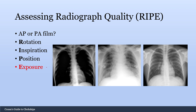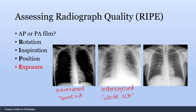E is for exposure. A well-exposed film allows you to see the vertebral column behind the heart. An underexposed film has a white-out appearance where you cannot see the vertebral column. An overexposed film clearly shows the vertebral column, but the lung fields appear almost burnt out and black. The ideal film lets you see the vertebral column without the lung fields being burnt out.